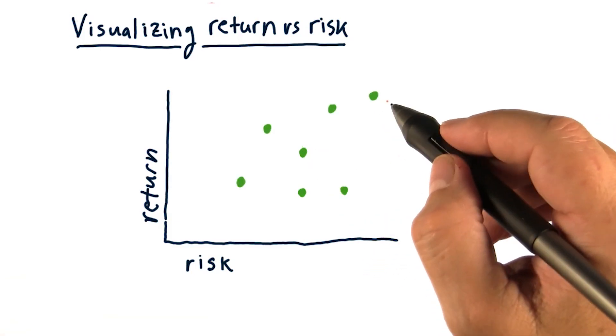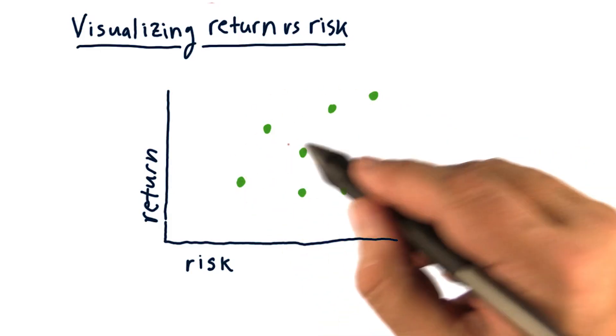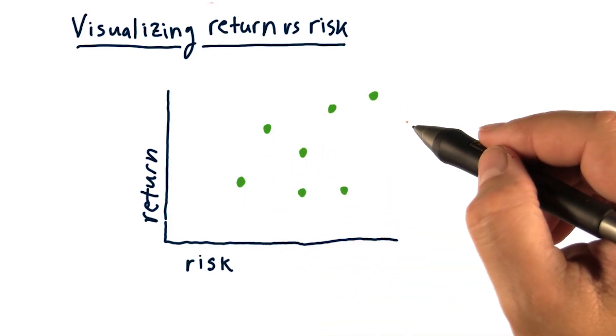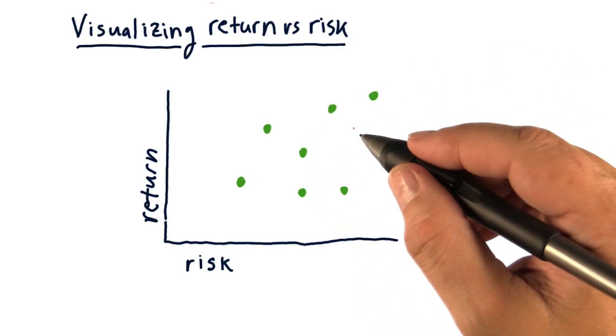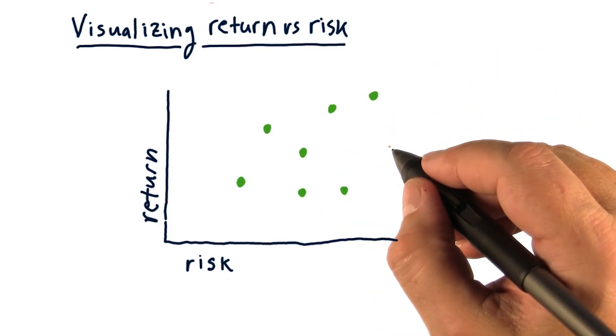We can build a portfolio by combining multiple assets like the various stocks I've got plotted here, and weighting each asset by a particular weight that represents its allocation within the portfolio.